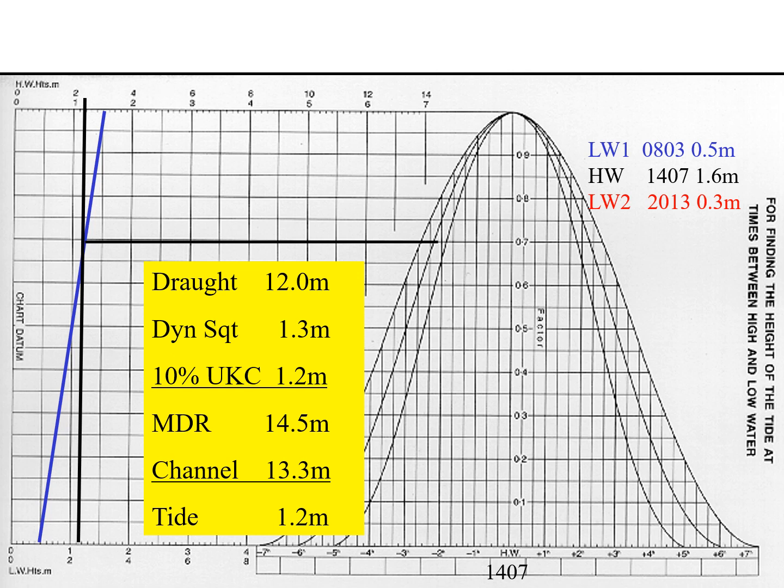Low water 1 at 0803 is occurring about six hours before the high water at 1407. The curves on the left side represent seven, six, and five hours before high water. Because low water 1 falls at six hours before high water, we draw the horizontal line to the curve for six hours before high water and stop there. From that point we drop a vertical line, which gives us the safe transit time — approximately two hours and ten minutes before high water.